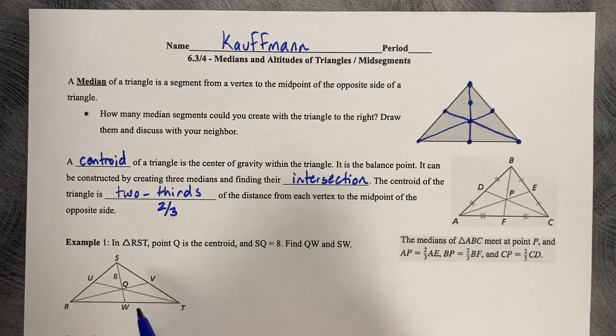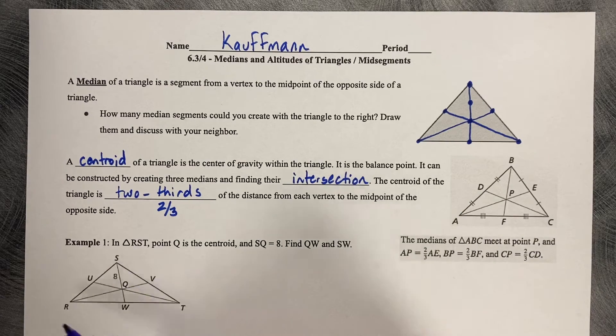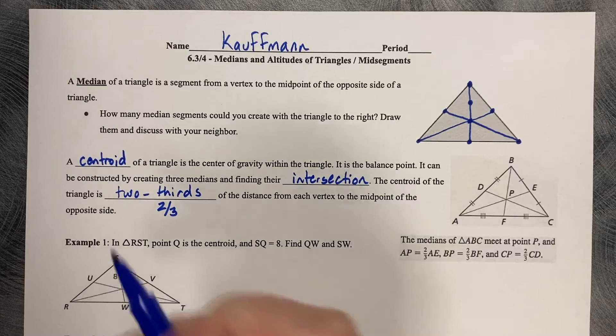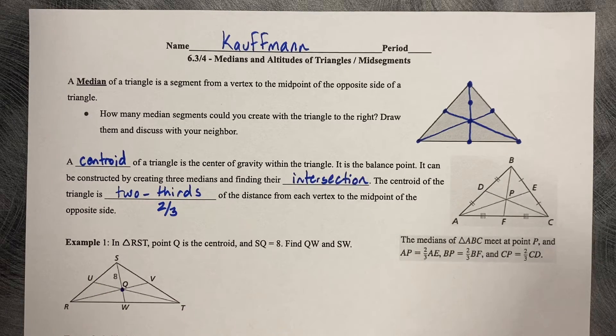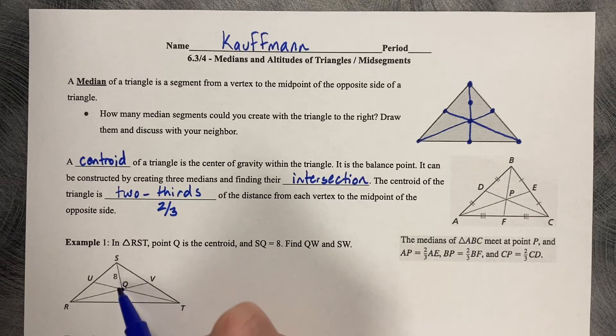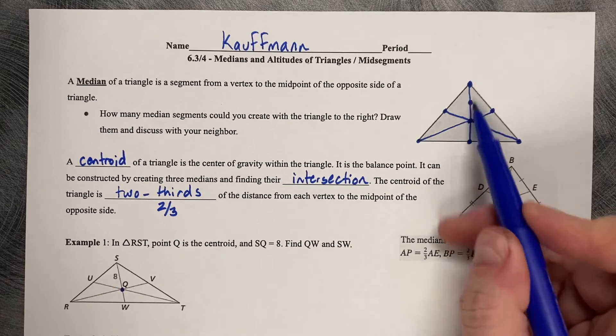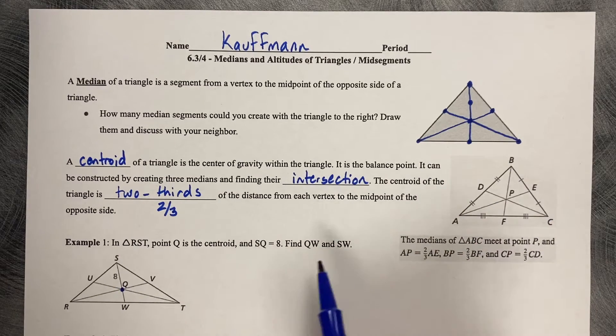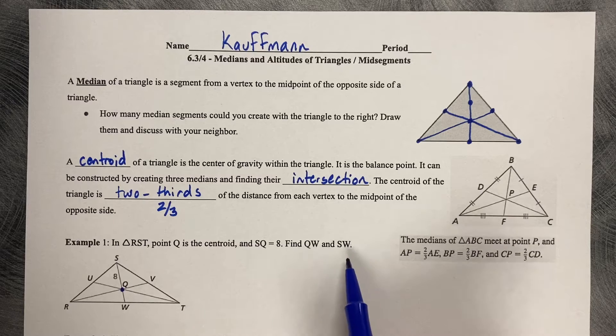So let's try one. Example number one, in triangle RST, point Q is the centroid and SQ is eight. So see how that's the longer bit of the median. Find QU and SW.